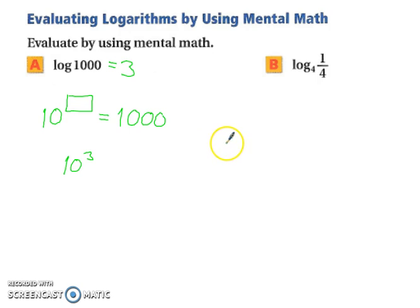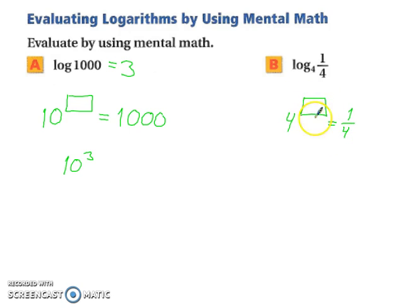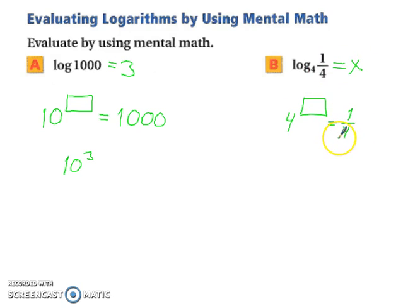Let's try this next one. Think of it as: 4 to the what equals 1/4? Say the answer equals your unknown x. When you switch to exponential, it becomes the base of your power, and then you switch your 1/4 and x. So 4 to the x equals 1/4. Well, 4 to the negative 1 gives you 1/4, so this equals negative 1.